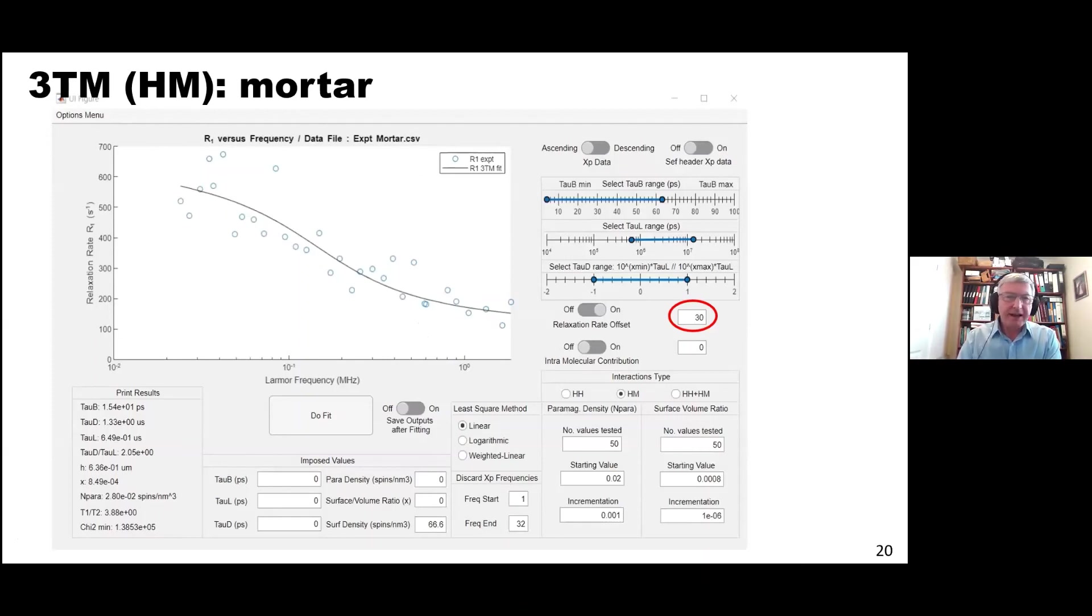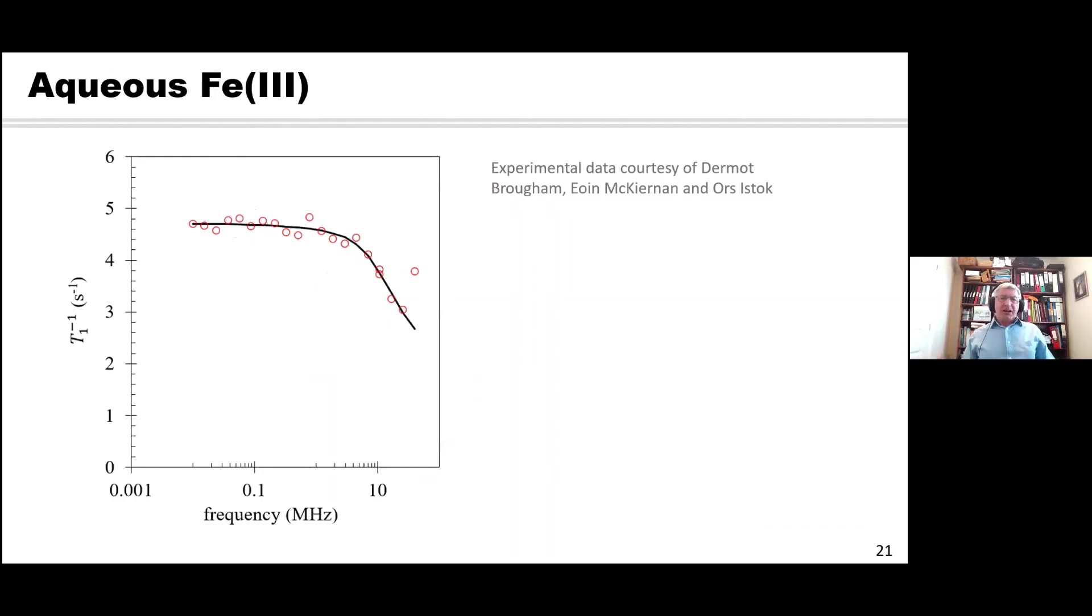Another good example of this very thing is in a completely different system. This is a mortar. Again, it's data from one of Jean-Pierre Corb's articles, much more scatty data, but look at the magnitude of the relaxation rates goes up to about there in hundreds. And the offset that provides the best fit is about 30 seconds to the minus one. And so anything associated with oxygen or intramolecular contributions is negligible on that scale. We know what that's due to. That's due to aqueous iron three plus.